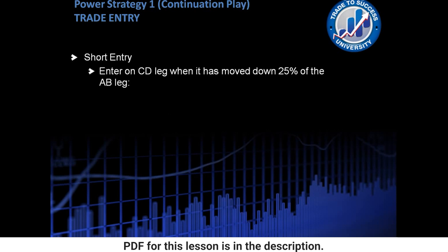So with a short entry, we want to enter on the C to D leg when it has moved down 25% of the A to B leg.